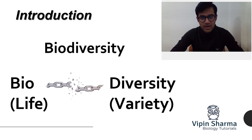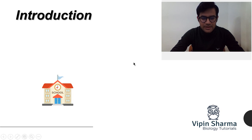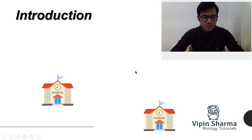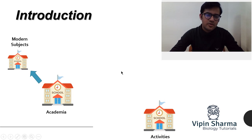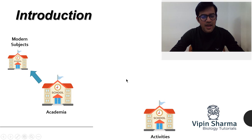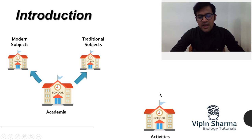So the variety of life forms you see is called biodiversity. Let's dig deeper using an example of schools, since it's quite relatable. Let's assume there are two types of schools: Type 1 concentrates on academia, and Type 2 concentrates on activities. In academia, the first variety focuses on modern subjects like foreign languages, and the second concentrates on traditional subjects like Sanskrit or astrology.